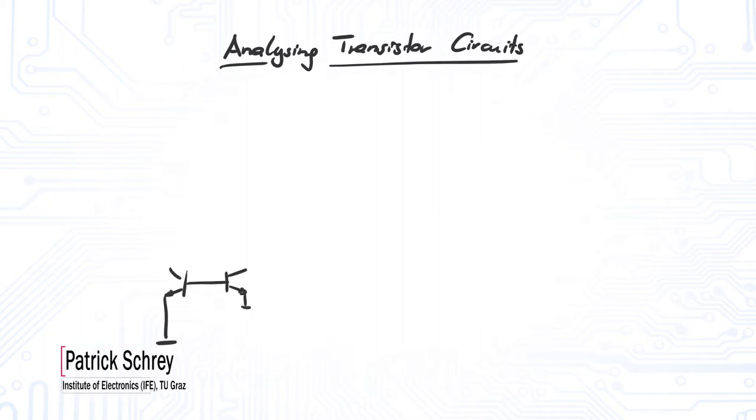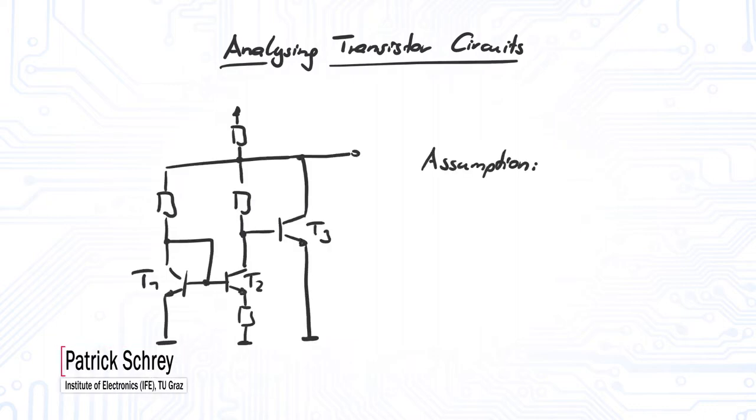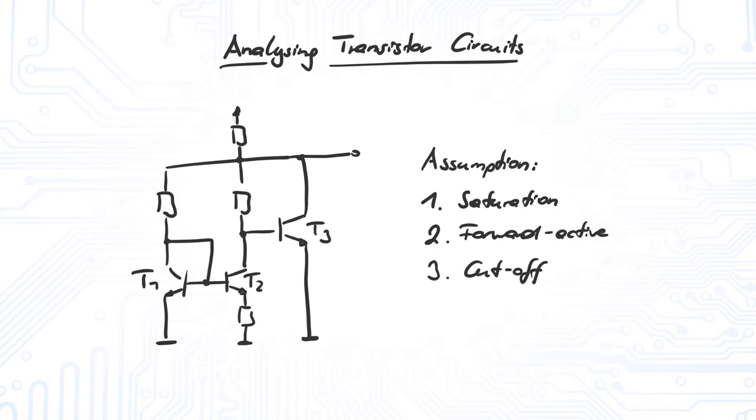To analyze a transistor circuit, it is usually required to make a couple of assumptions. These assumptions concern the region of operation of each transistor. But as these are mere assumptions, we have to check on each one of them before we finish our calculations.